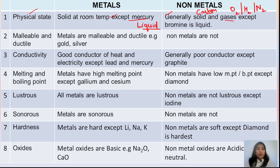Among non-metals, oxygen and hydrogen are gases. However, there is one exception — bromine is a liquid non-metal, it exists in liquid form. So in terms of physical state, metals are mostly solid (with mercury as the liquid exception), while non-metals include solids, gases, and bromine as the liquid exception.